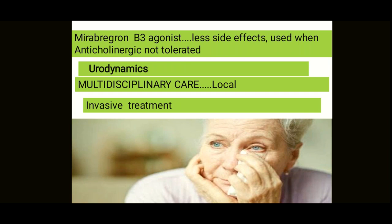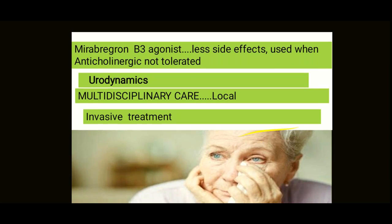The guideline has introduced a new concept of local and regional multidisciplinary teams for invasive treatment. The invasive treatment involves botulinum toxin A — importantly, it is type A, not B. The dose has changed: it was 200 units initially, now it is 100 units initially. A review should be performed at 12 weeks — that is, 3 months.